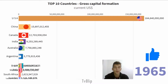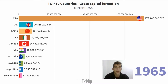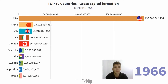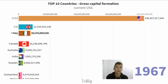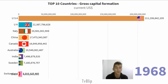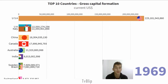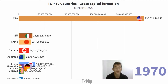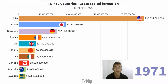Gross capital formations, formerly gross domestic investments, consist of the outlays and additions to the fixed assets of the economy, plus net changes in the level of inventories. Fixed assets include plant improvements, fences, ditches, drains, and so on.